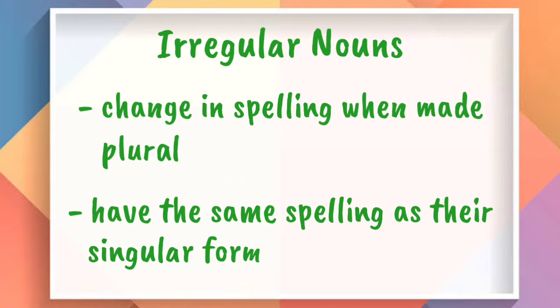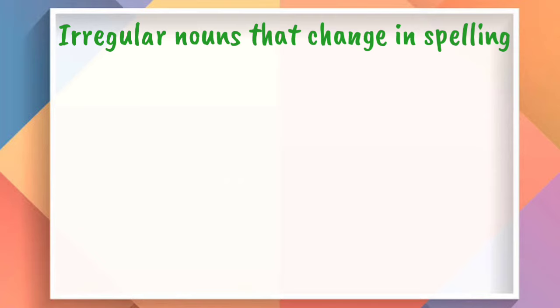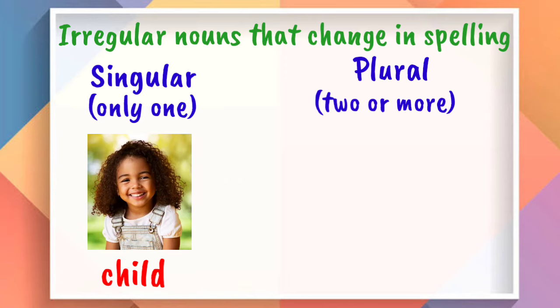Let's have some examples of irregular nouns that change in spelling when made plural. Child. The plural form of child is children.